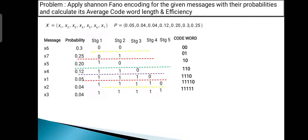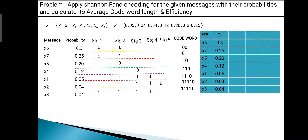To calculate the average codeword length, we form a table with columns for messages, respective probabilities, and codewords. The codewords are: X6 → 00, X7 → 01, X5 → 10, X4 → 110, X1 → 1110, X2 → 11110, X3 → 11111.